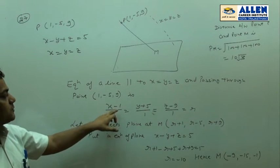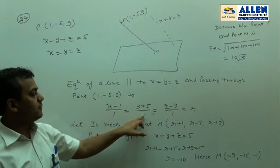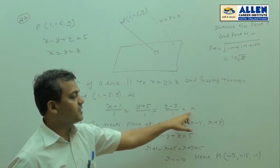Hence, equation of this line is (x minus 1) upon 1 equal to (y plus 5) upon 1 equal to (z minus 9) upon 1. Let it be equal to R.